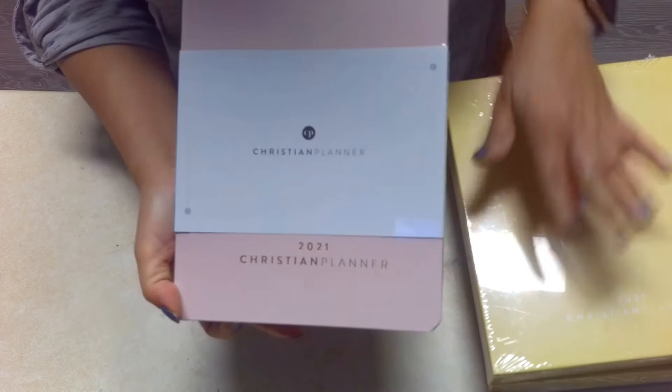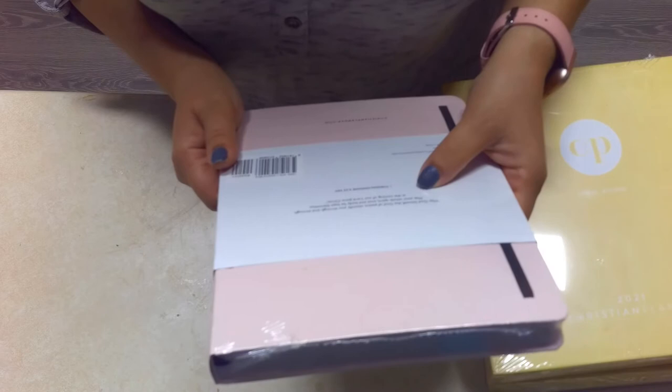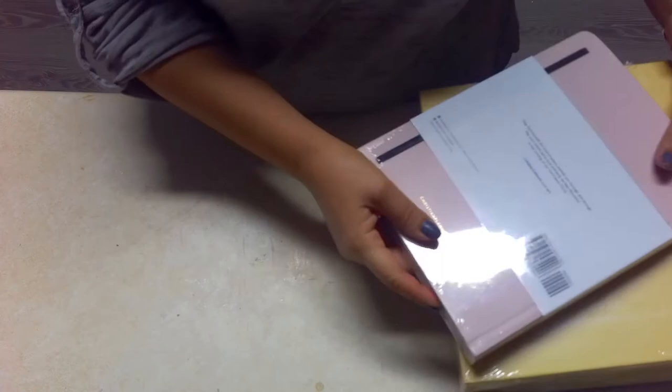So this one is the 2021 Christian Planner, this is just their hardcover. On the back it has a scripture from First Thessalonians 5:23 in the NIV version: 'May God himself, the God of peace, sanctify you through and through. May your whole spirit, soul and body be kept blameless at the coming of our Lord Jesus Christ.' So here is this one and then I will open them up and give you a deeper look inside these.